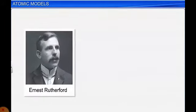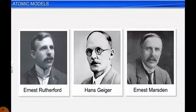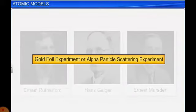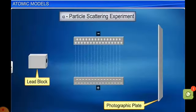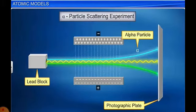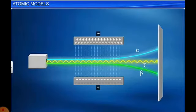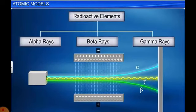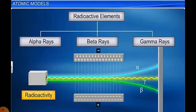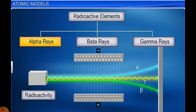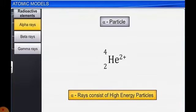Then came Ernst Rutherford along with Hans Geiger and Ernst Marsden. These three scientists conducted the gold foil experiment, also called the alpha particle scattering experiment. To understand this, we need to discuss radioactive elements. Radioactive elements continuously emit radiations, and this phenomenon is called radioactivity. The radiations emitted are alpha, beta, and gamma rays. Alpha rays are positively charged particles, beta rays are made of negative charge particles, and gamma rays are neutral.